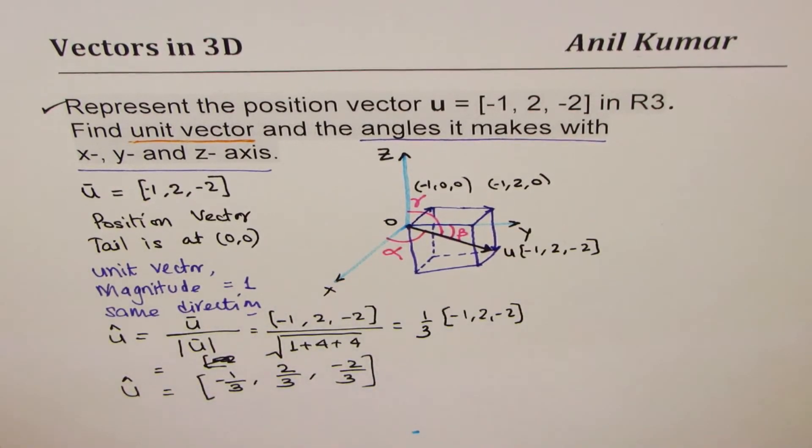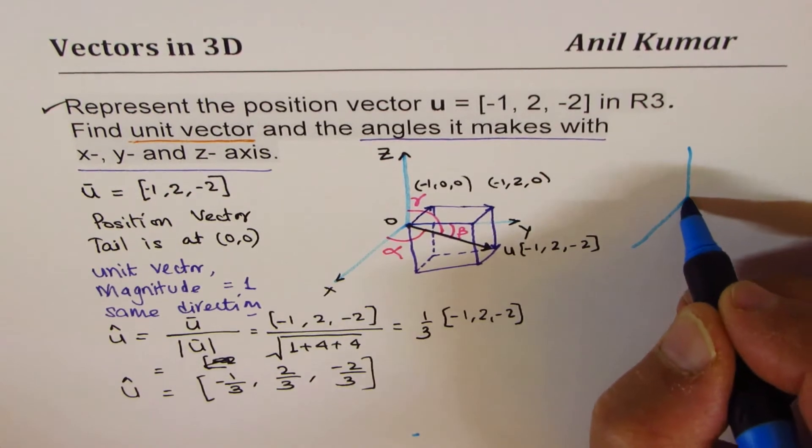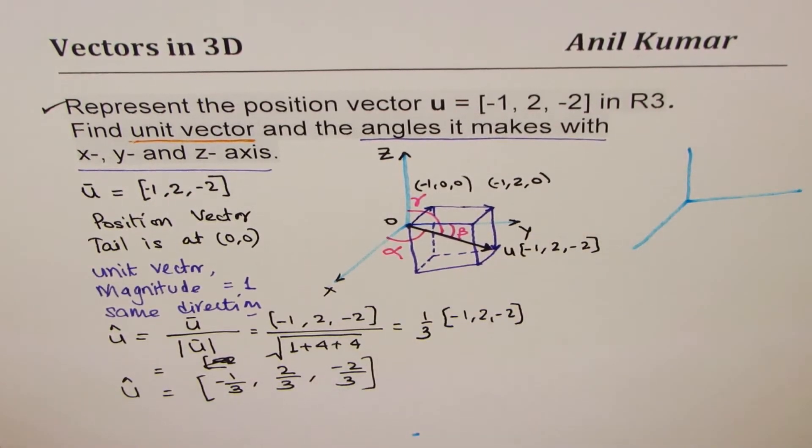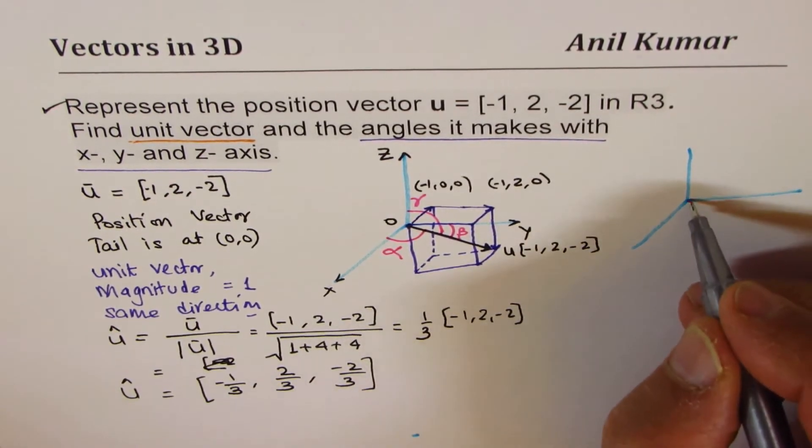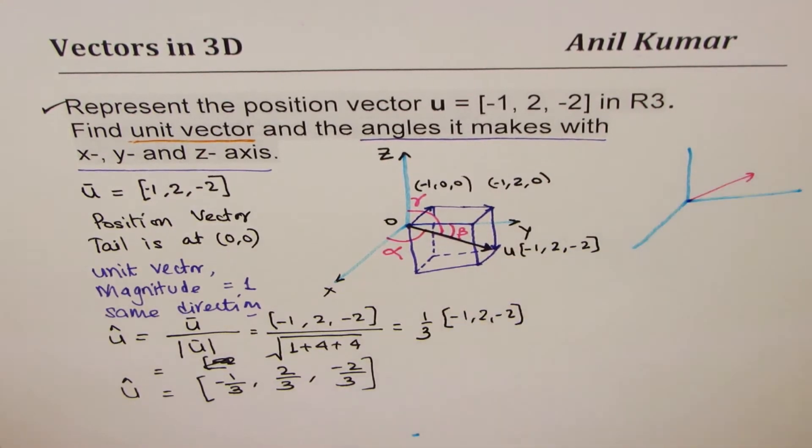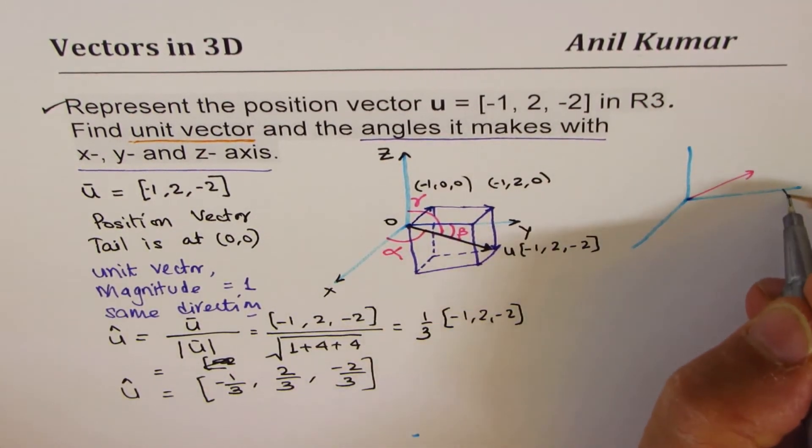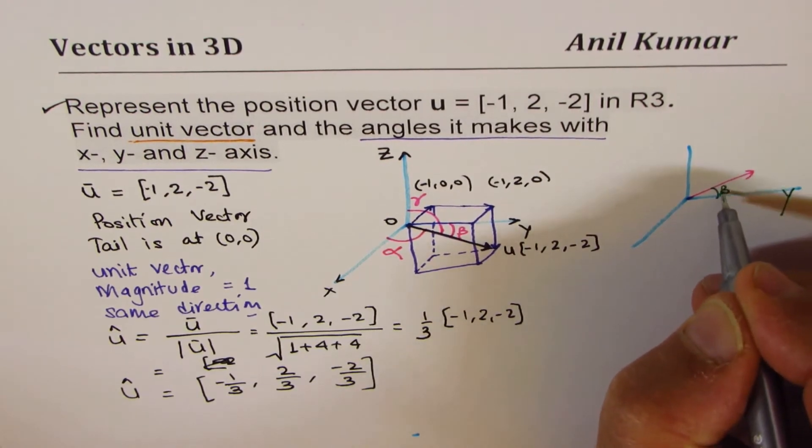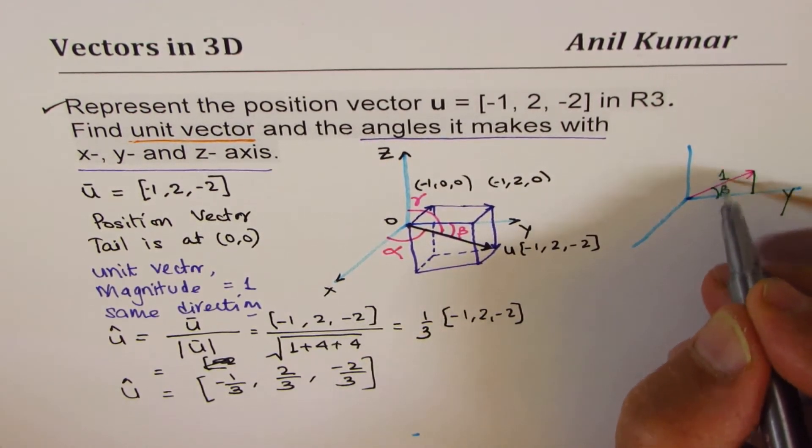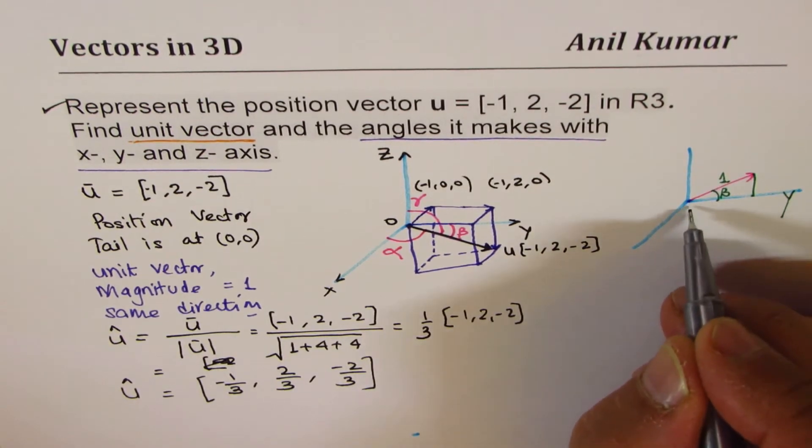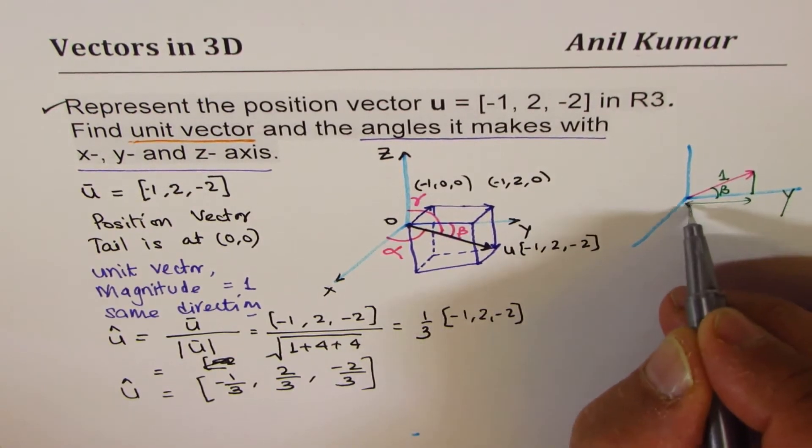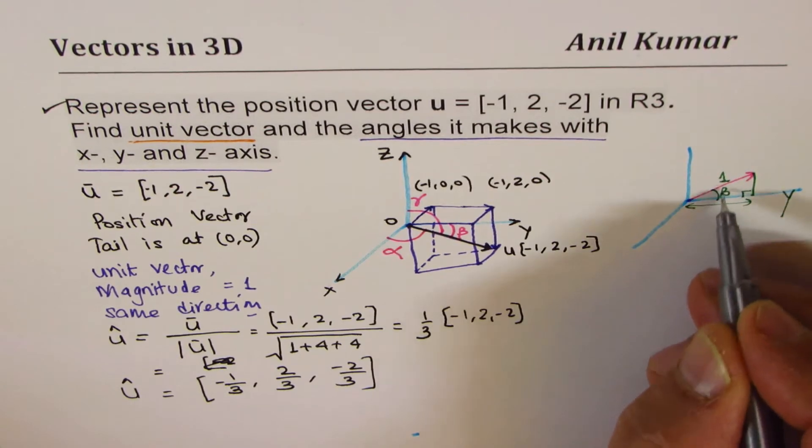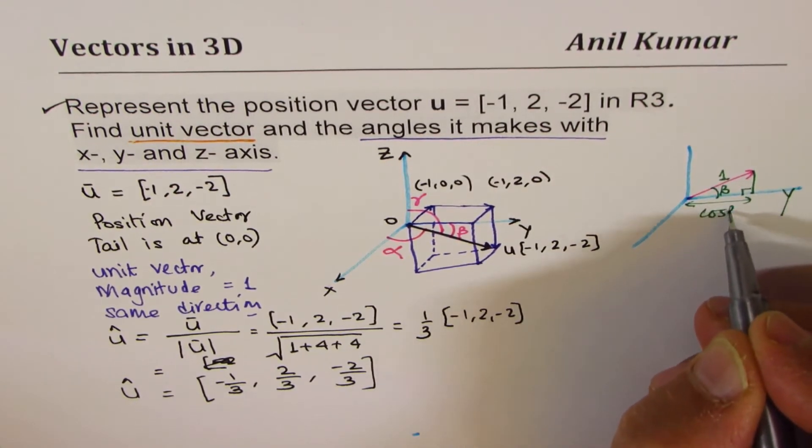Normally, let me show you here, just to explain the point, with a very simple example. If I have a vector kind of like this, now, the angle which it makes with y axis is beta. If the magnitude is 1, then this distance is how much? This distance is cos beta.